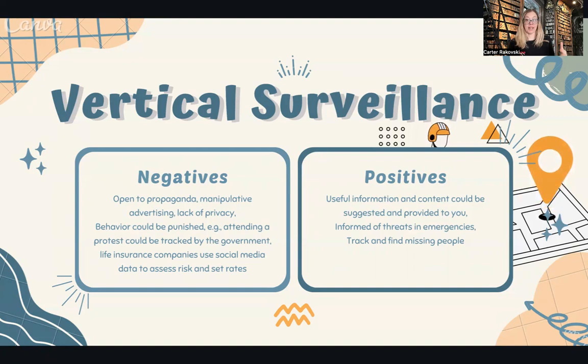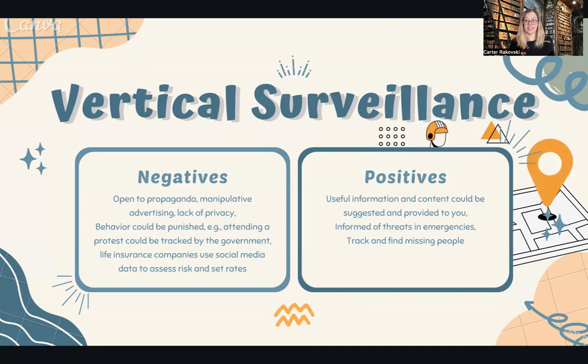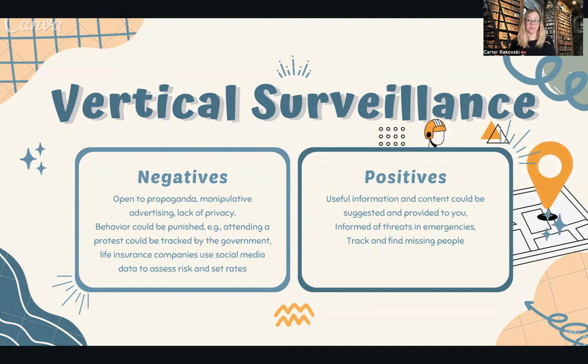Our behavior could be punished. We could be tracked by the government if we attend a protest, sign petitions, or follow certain pages or activists. Life insurance companies also use social media to assess risk and set rates that we might not even realize. Health insurance companies could do so as well. You can pretty quickly get into some really dark uses of big data.